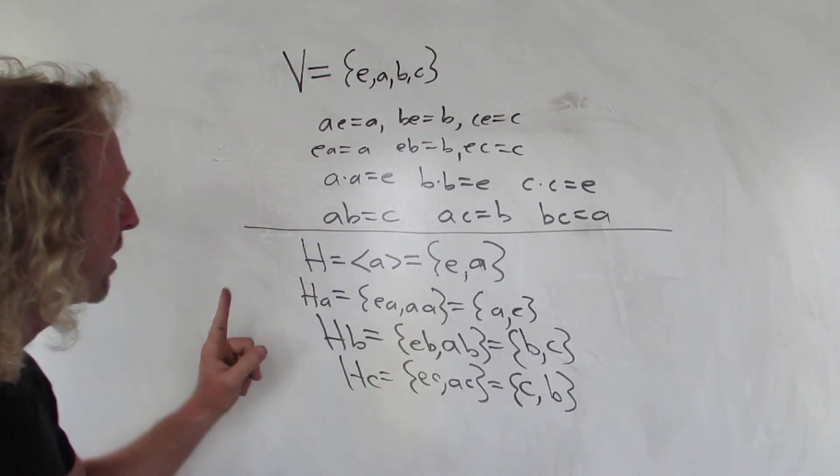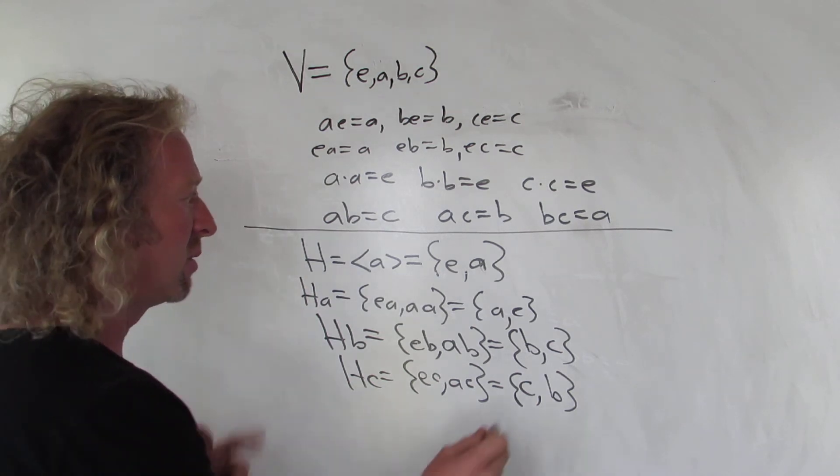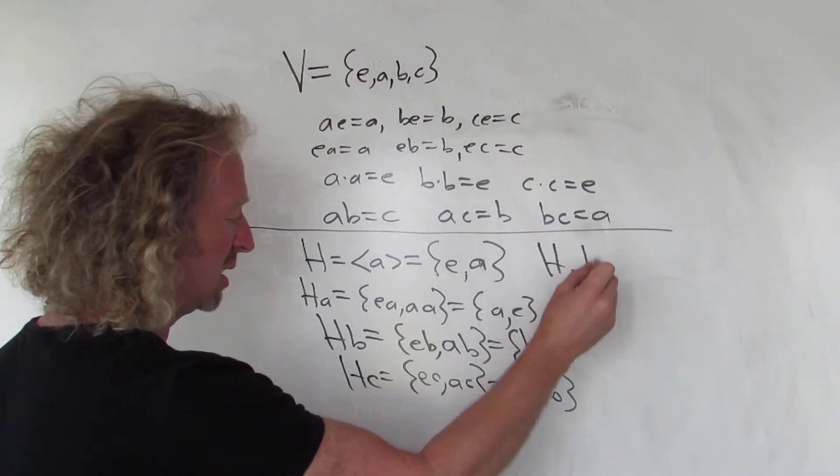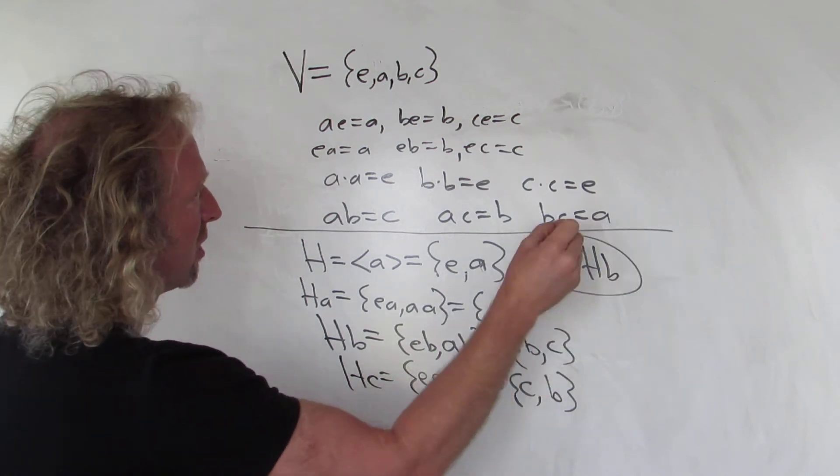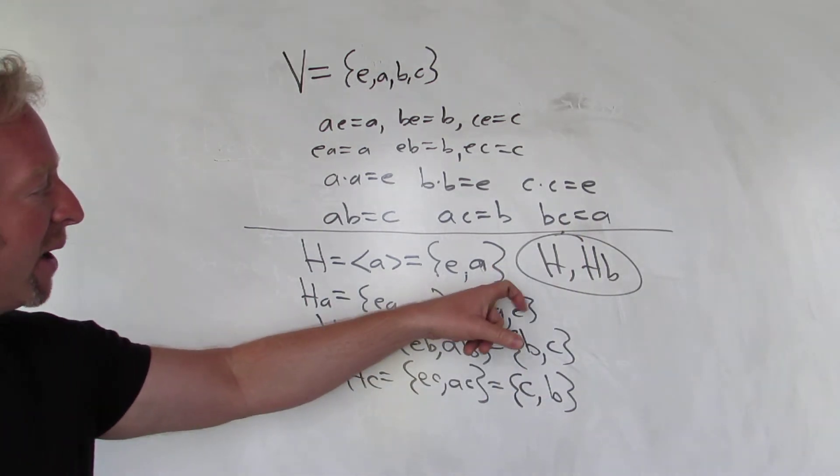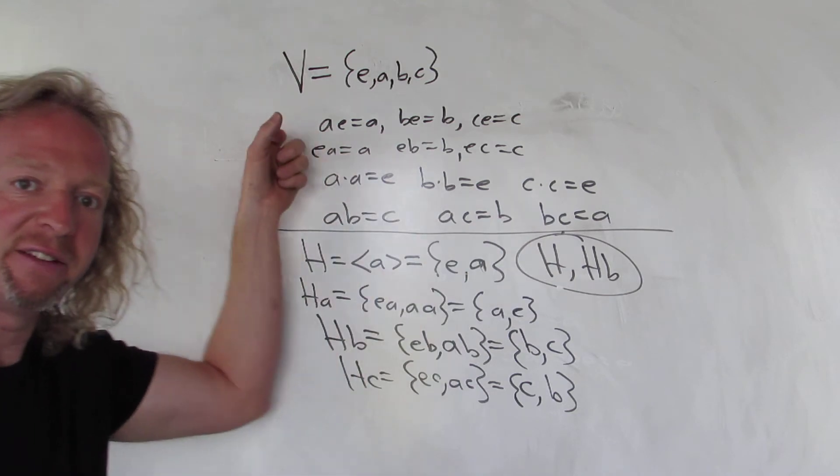So it looks like there's two right cosets of H in V. Those two distinct cosets would be H and HB, or H and HC. So those are the two cosets of H in V.